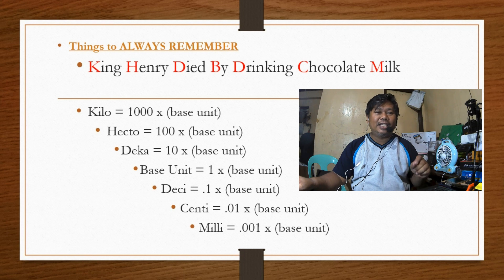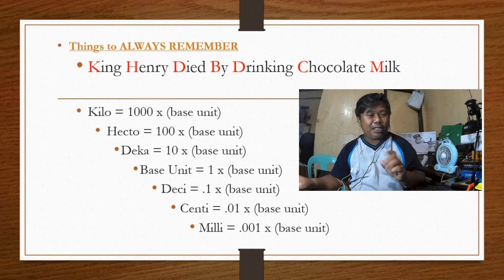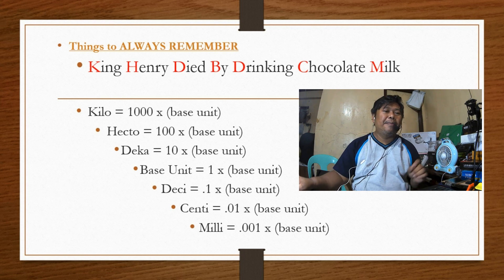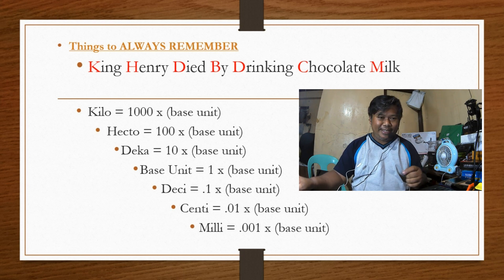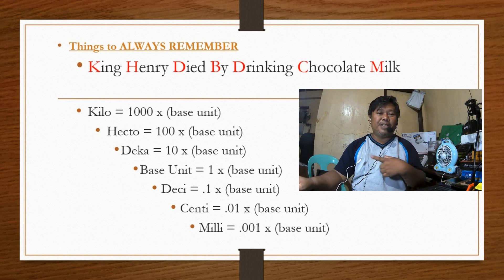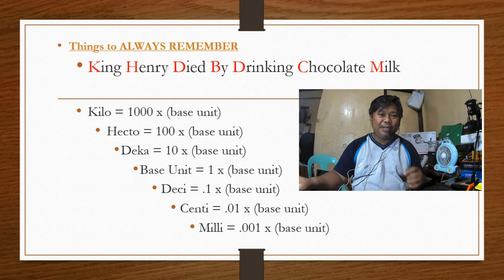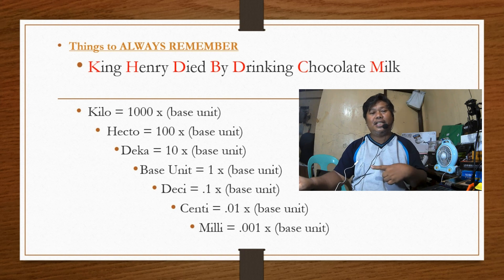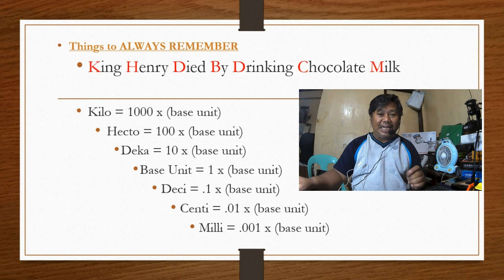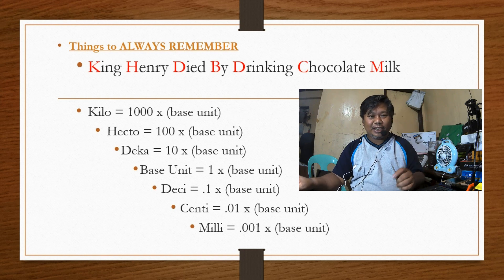So: Deka is 10 times the base unit. Then you have deci, which is 0.1 times the base unit. Centi is 0.01 times the base unit. Milli is 0.001 times the base unit — so a millimeter is 0.001 of a meter.